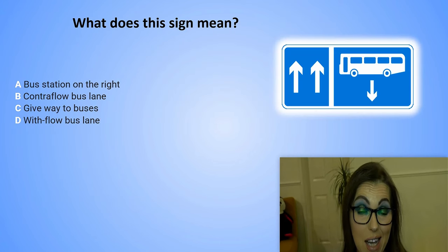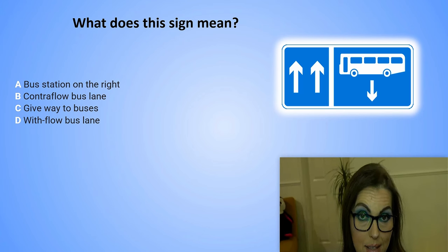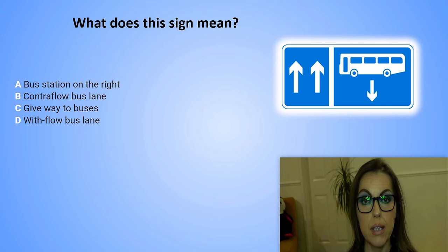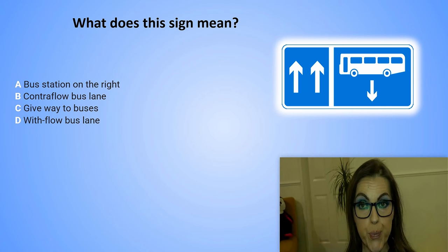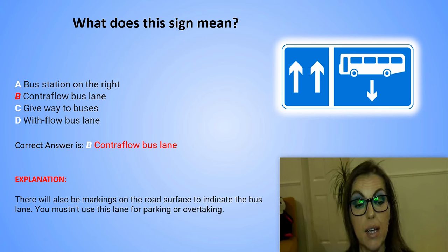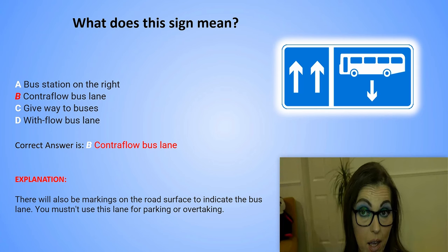What does this sign mean? A. Bus station on the right. B. Contraflow bus lane. C. Give way to buses. Or D. With-flow bus lane. The correct answer is B. Contraflow bus lane. Explanation: There will also be markings on the road surface to indicate the bus lane. You mustn't use this lane for parking or overtaking.